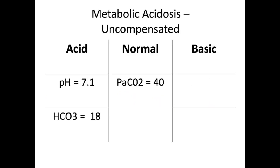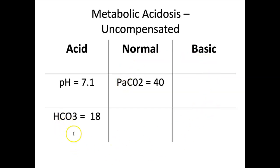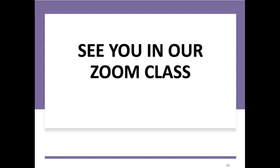One more example: pH is 7.1, which is acidic. Bicarb is 18 — also low and acidic. PaCO2 is between 35 and 45, which is normal. This is metabolic acidosis. However, the pH is still on the acidic side and not normal. We had hoped the PaCO2 would be over in the basic side to compensate for this metabolic acidosis, but it's not — it's normal. So this is metabolic acidosis, uncompensated. We will review more examples in our Zoom class, so bring any questions from the past three lectures. See you then.